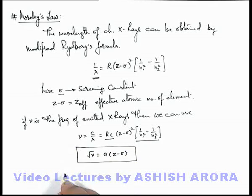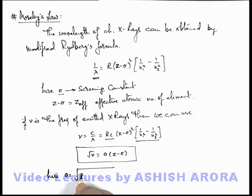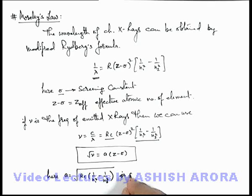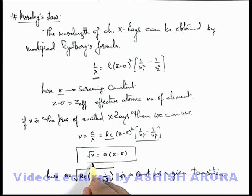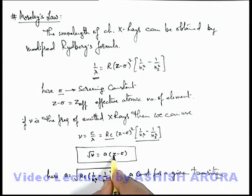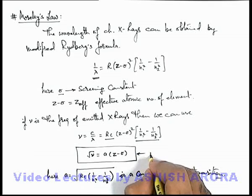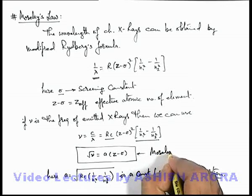Here, the value of A is √(Rc × (1/n₁² − 1/n₂²)), which is a constant for a given transition of an electron between specified orbits. So in this relation we can see that the square root of frequency is linearly related with the atomic number of the anode element, and this specific rule we call Moseley's Law.